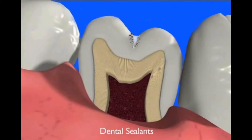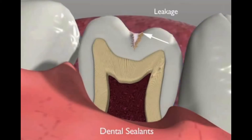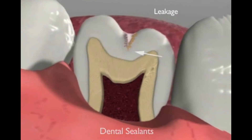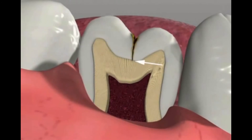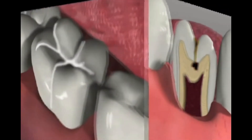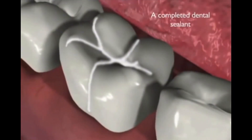But sealants do have some potential downsides. It is possible for microleakage to occur along the sealant, especially if moisture is present when the sealant is placed. If leakage does occur, it may be difficult to detect until a large cavity develops beneath the sealant. It is important to remember that sealed teeth are not completely resistant to tooth decay. It is a big mistake to relax nutrition and oral hygiene standards on the belief that sealants alone will prevent cavities.